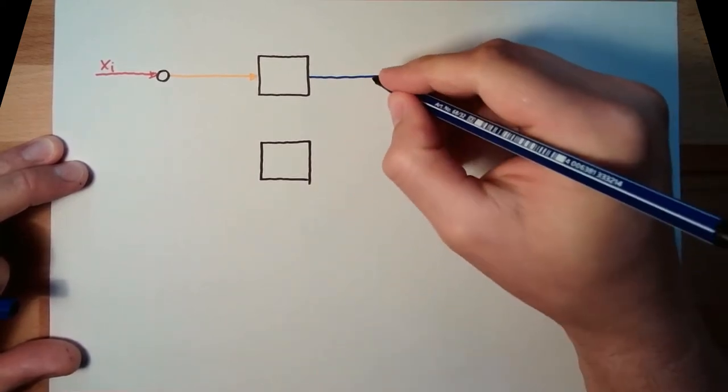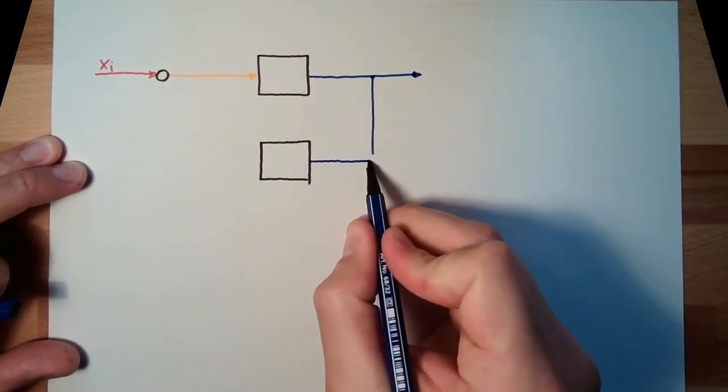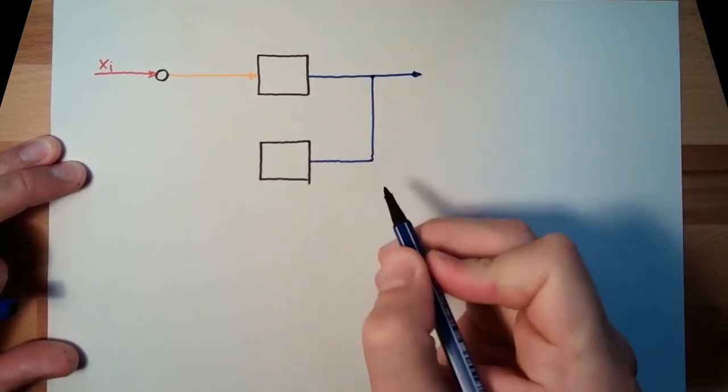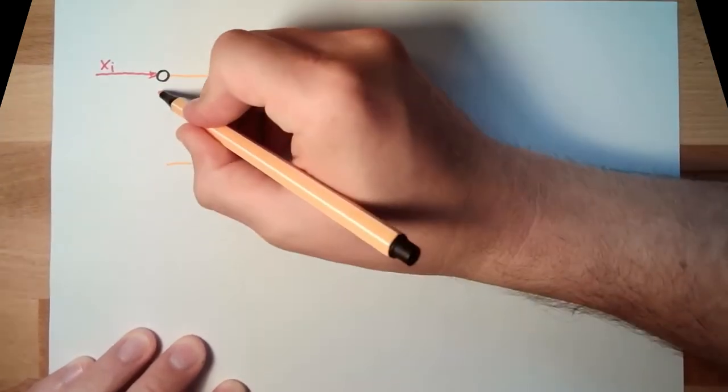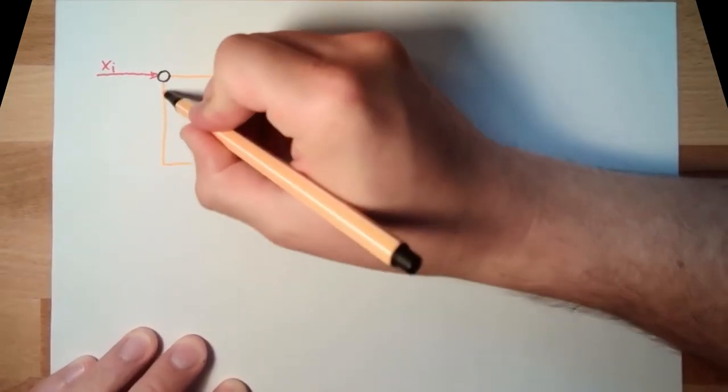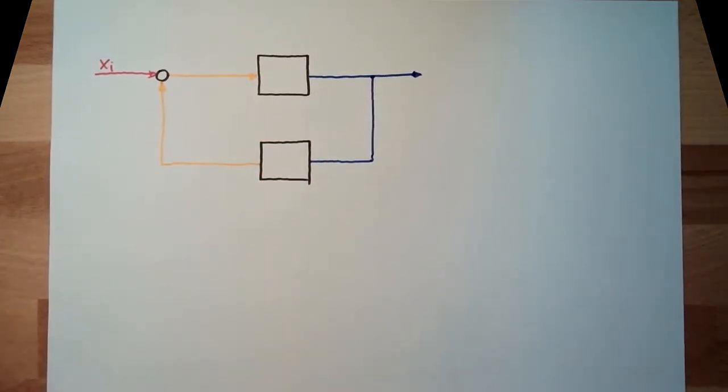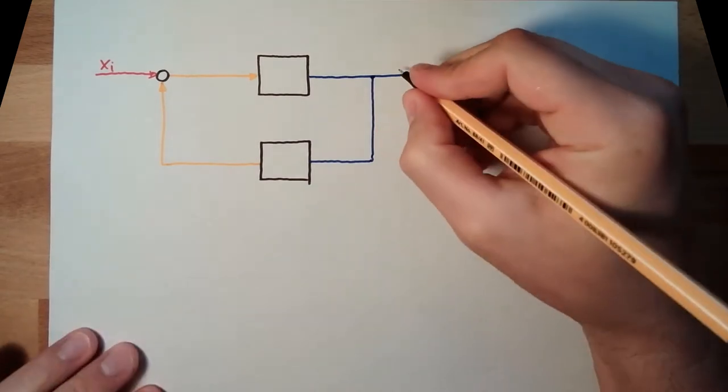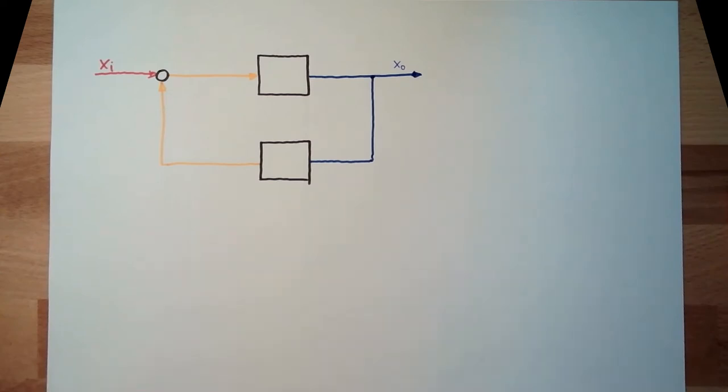And now it comes, the output value, there is a feedback of the output value. And this feedback of the output value is leading to here. So, here we have XO, an arrow drawn.